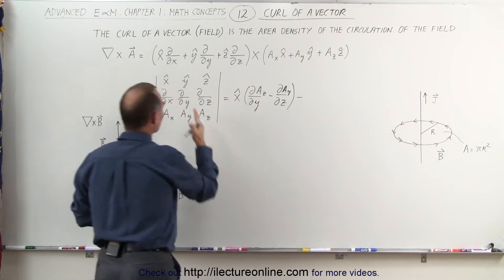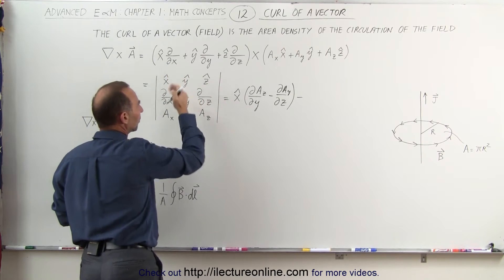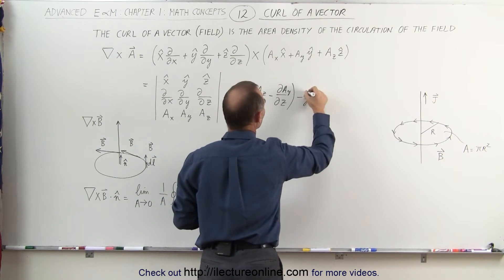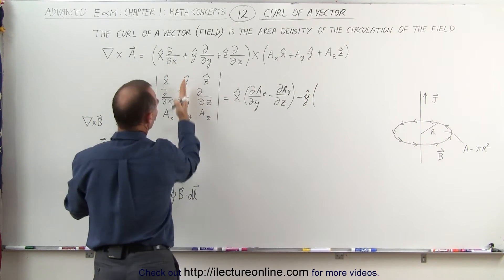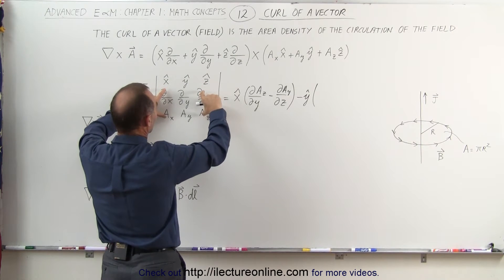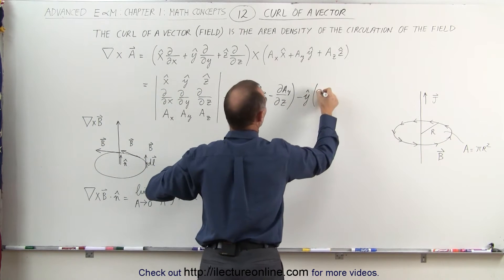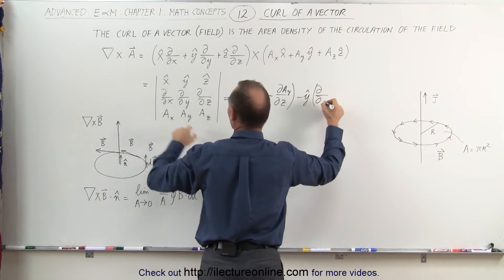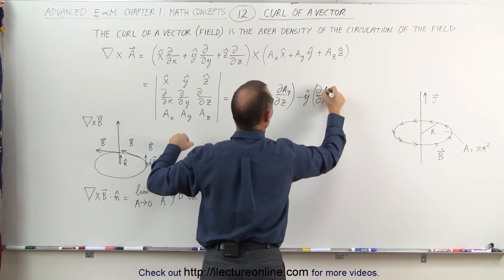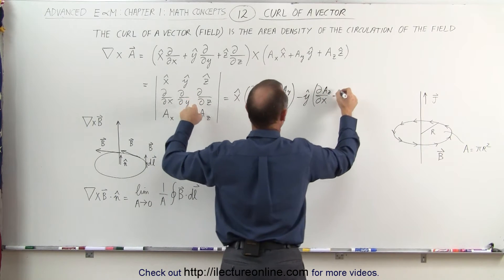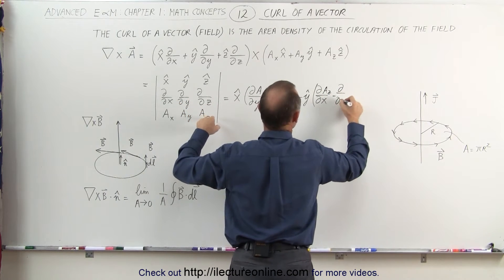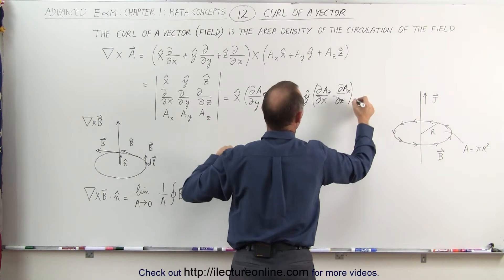Now we go minus, remember we alternate the signs, plus, minus, plus, minus the Y unit vector times, when we get rid of this column, this row, we have those four elements left. So we multiply these two and subtract and we multiply those two. So it's a partial with respect to X of A_Z minus the partial with respect to Z of A_X.